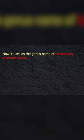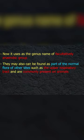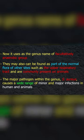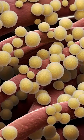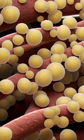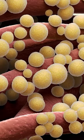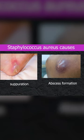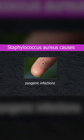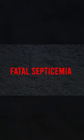It is now used as the genus name. As a facultatively anaerobic group, staphylococci may also be found as part of the normal flora of other sites such as the upper respiratory tract, and are commonly present on animals. The major pathogen within the genus is S. aureus, which causes a wide range of minor and major infections in humans and animals, including abscess formation, a variety of pyogenic infections, and can even cause fatal septicemia.